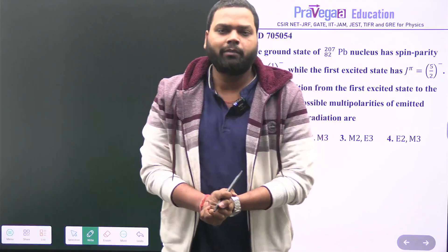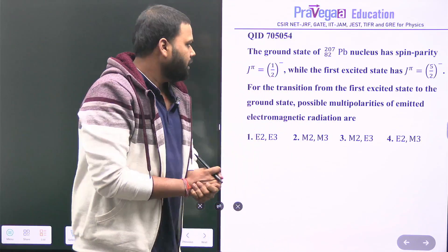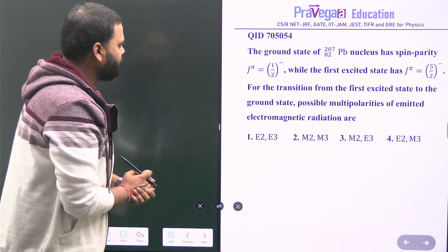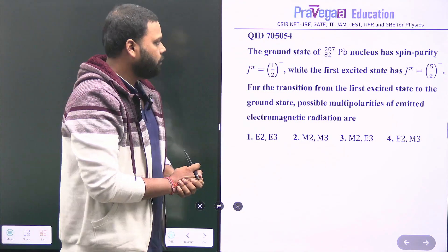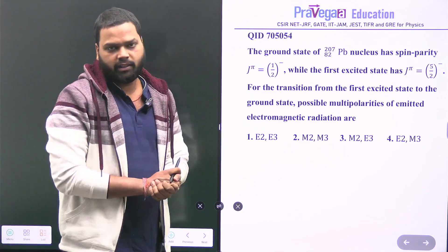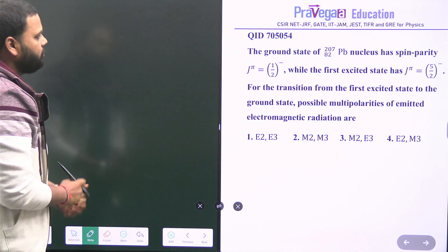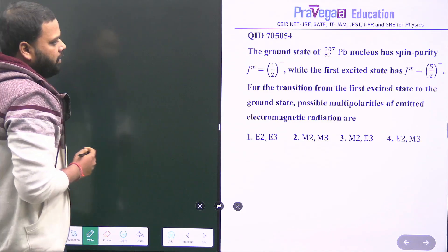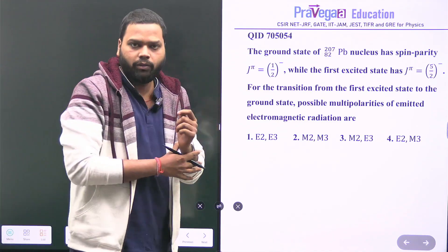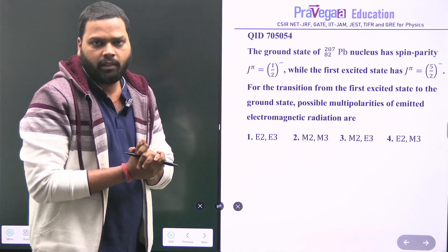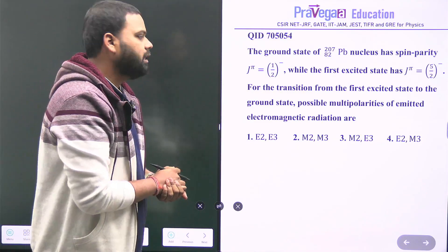Hello friends, welcome to Pravga Education. In this video I am going to discuss a question from CSIR Net December 2023 exam. The question ID is 705054 and the question is from nuclear physics — specifically the subtopic of gamma decay.